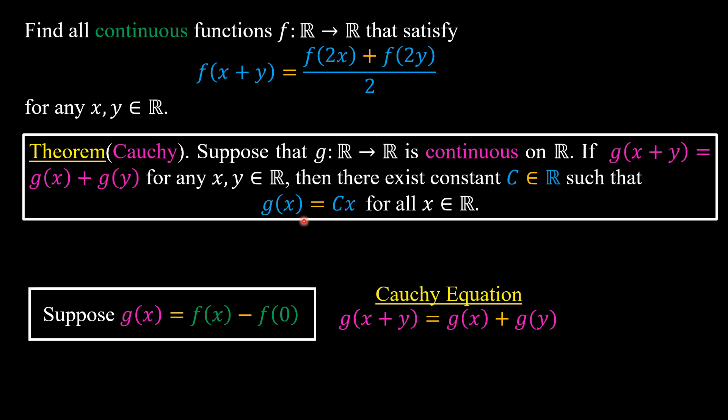In our case, we have g equals f(x) minus f(0). f(x) is continuous functions and f(0) is a constant which is always continuous. So we have g is continuous, which means g fulfills the sufficient conditions on Cauchy theorem.